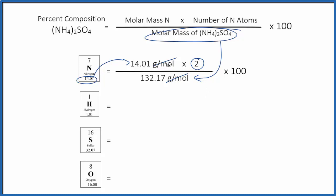We multiply 14.01 times 2. We get that number divided by 132.17. And finally, we're going to multiply by 100 to give us 21.20%. That's the percent composition by mass of the nitrogen here in ammonium sulfate.